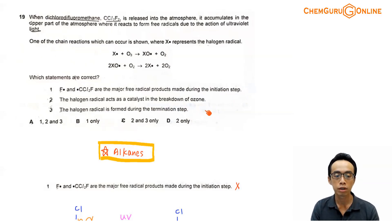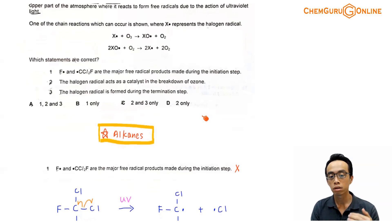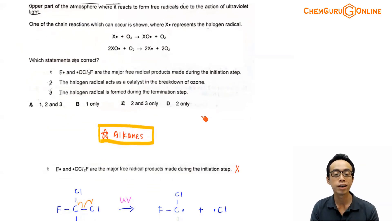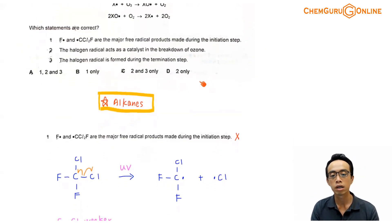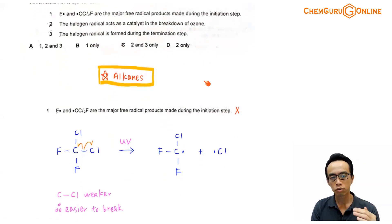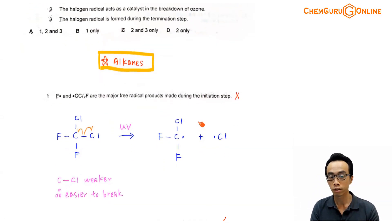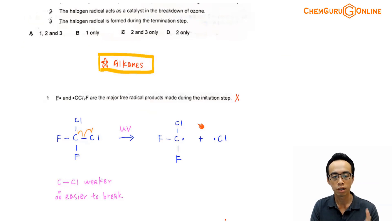Now the topic tested in this question is under alkanes. More specifically, it is targeting our mechanism free radical substitution. So let's run through our statements 1, 2, 3 and see which one of them are reasonable.